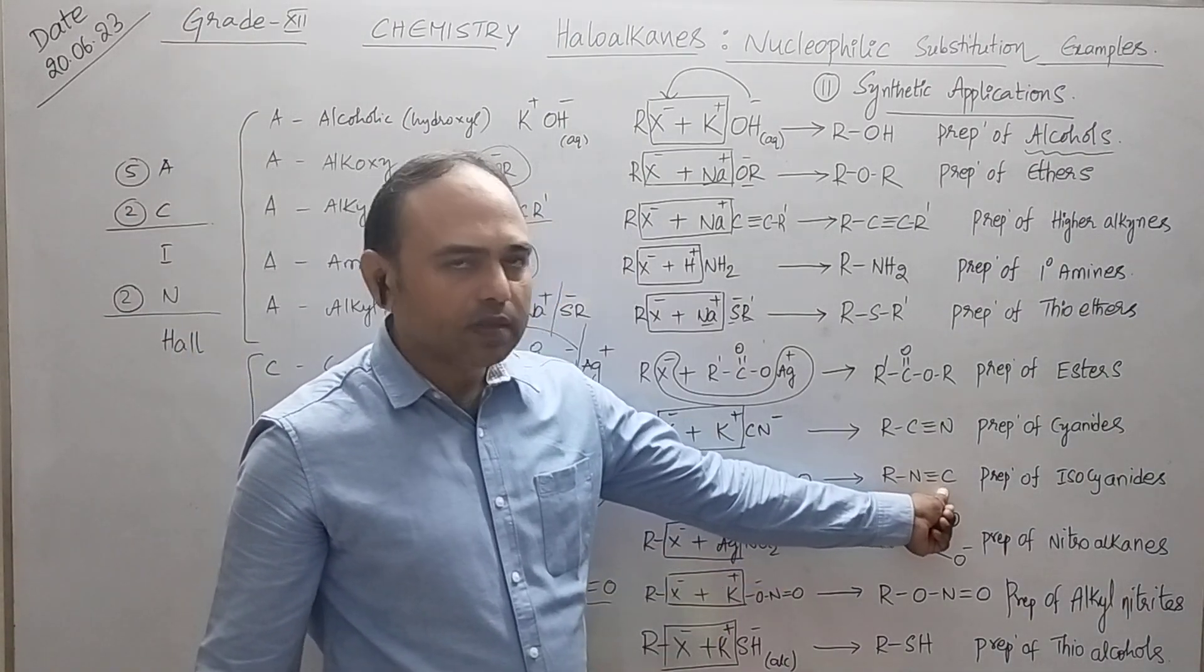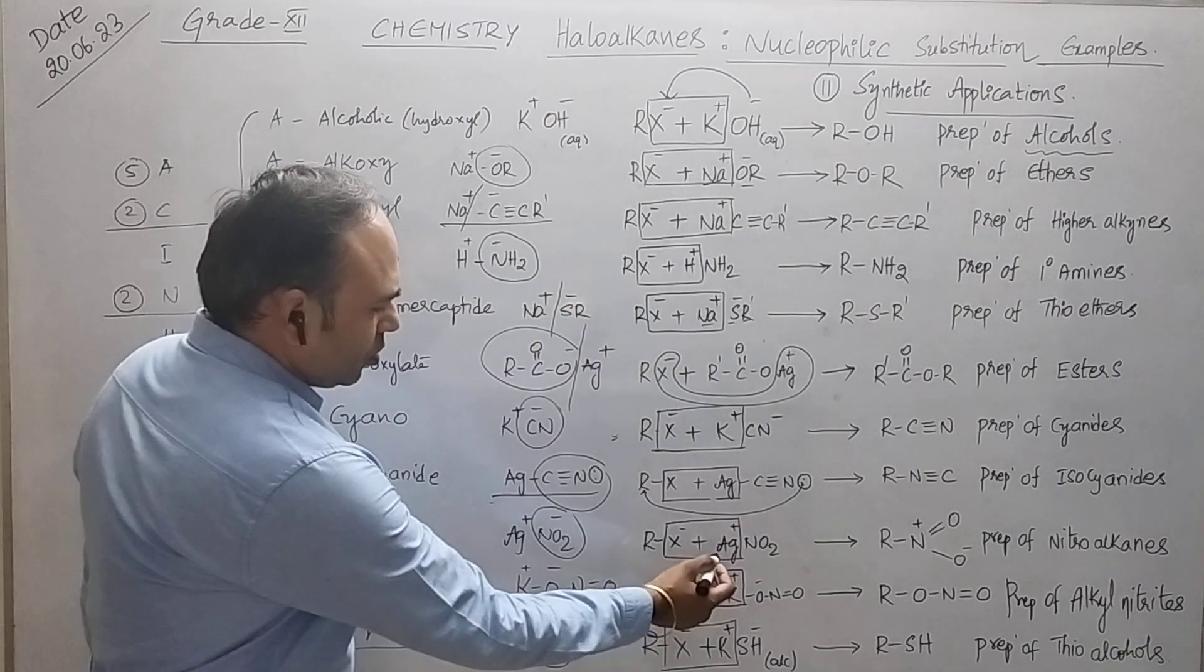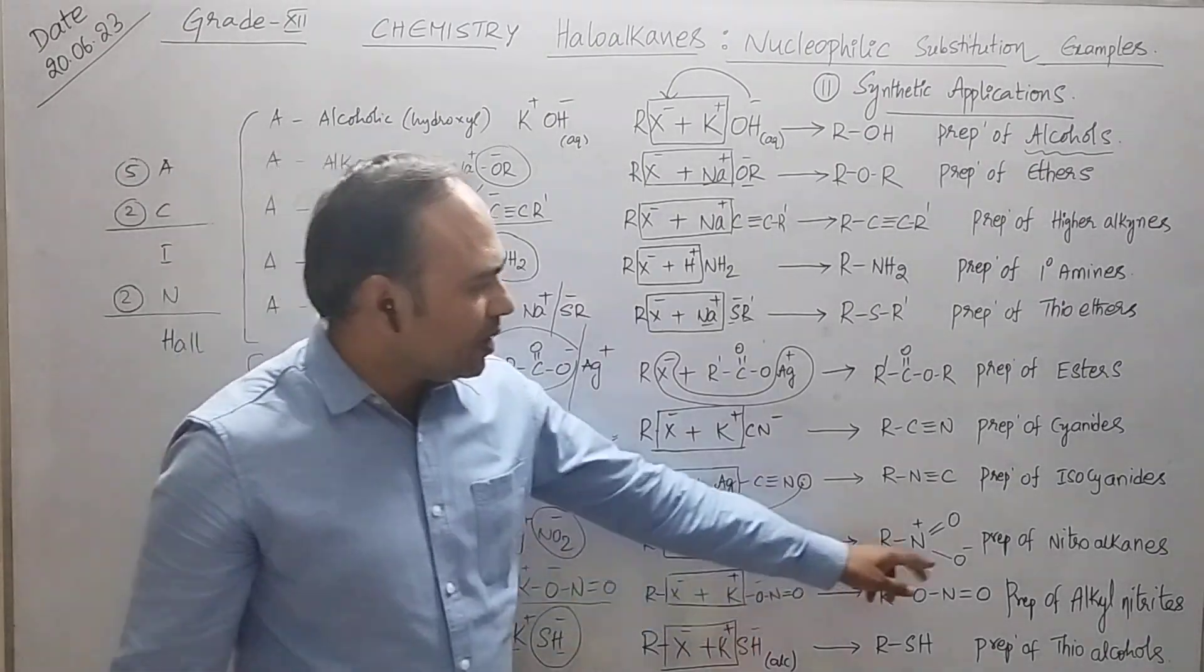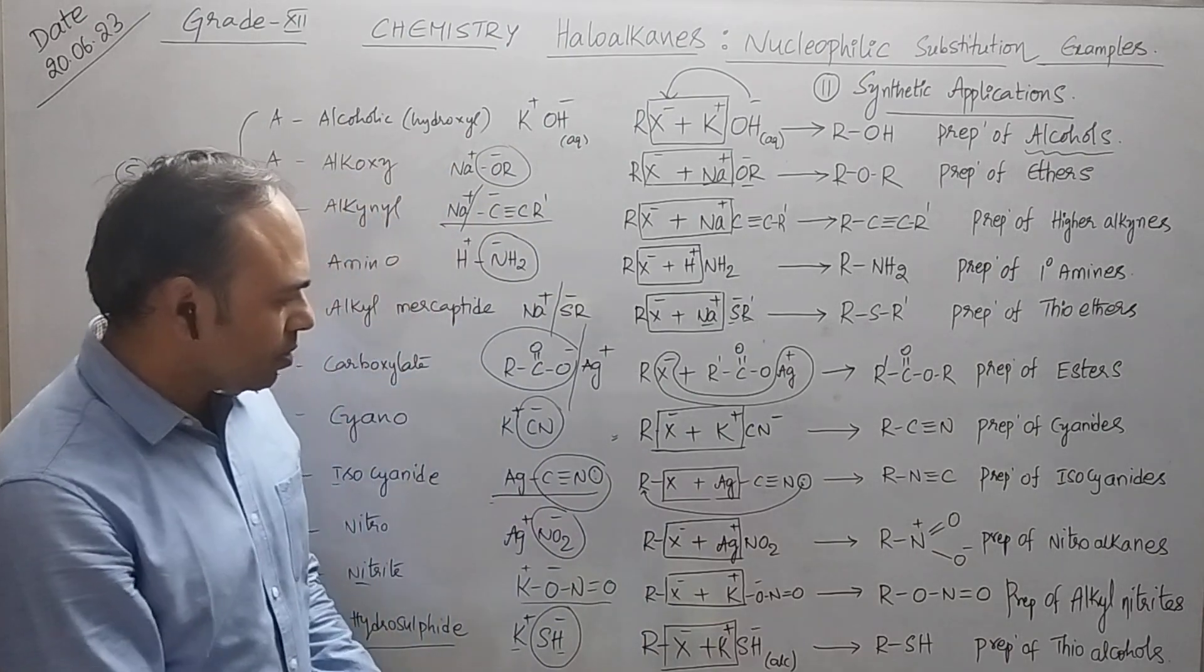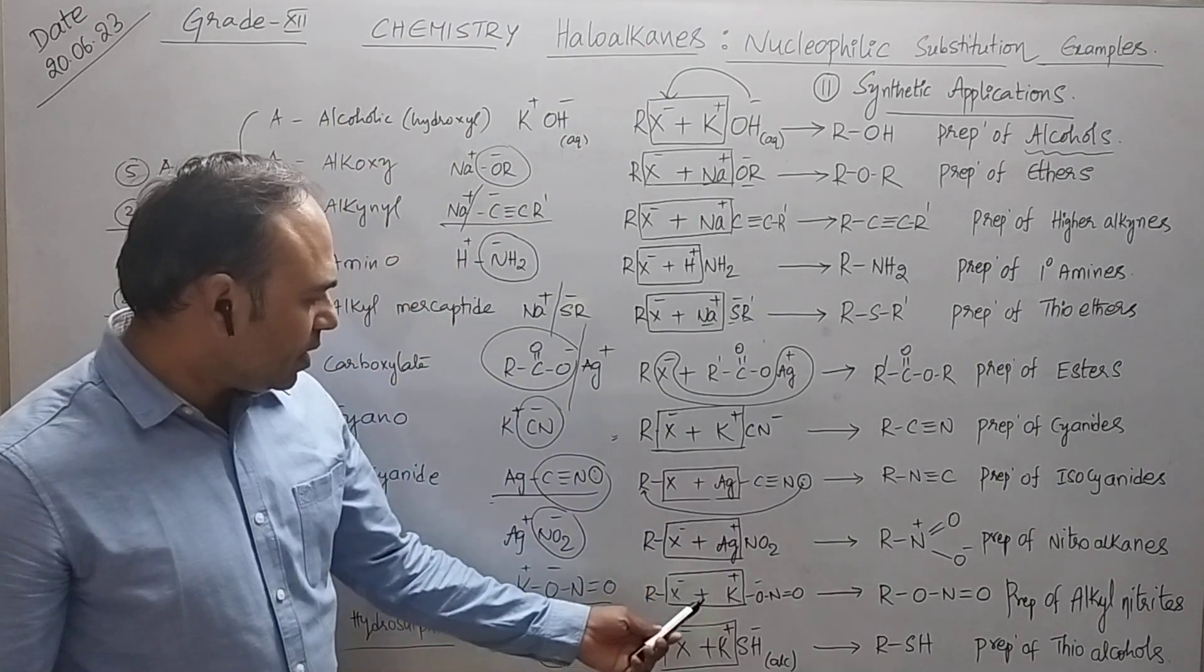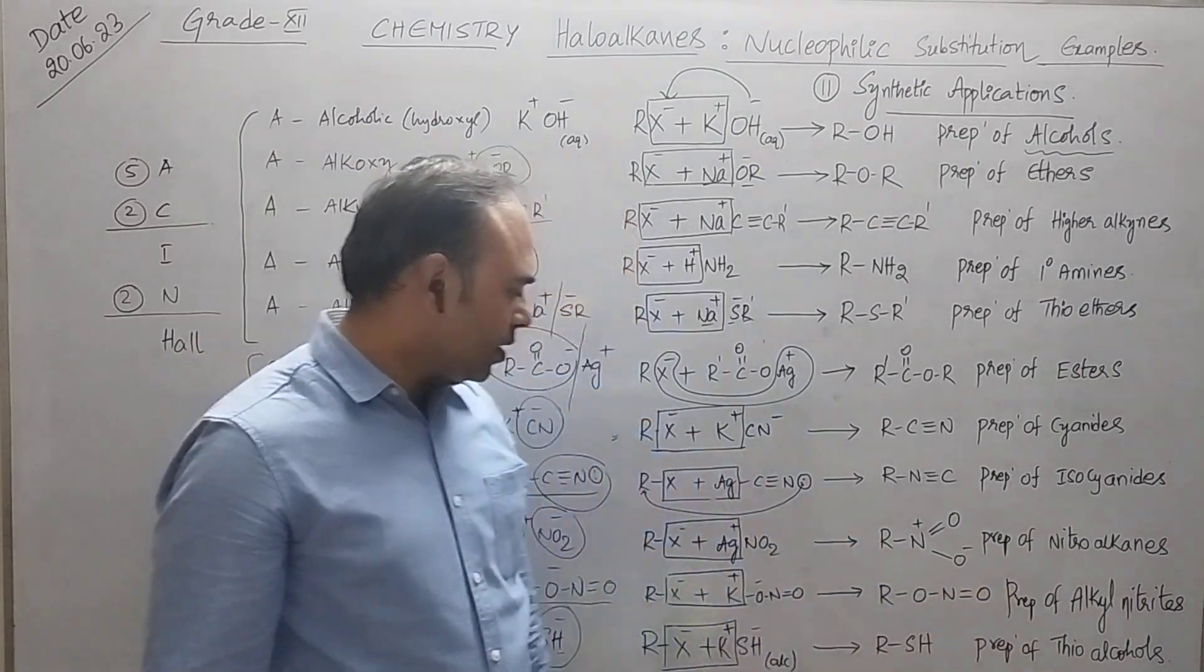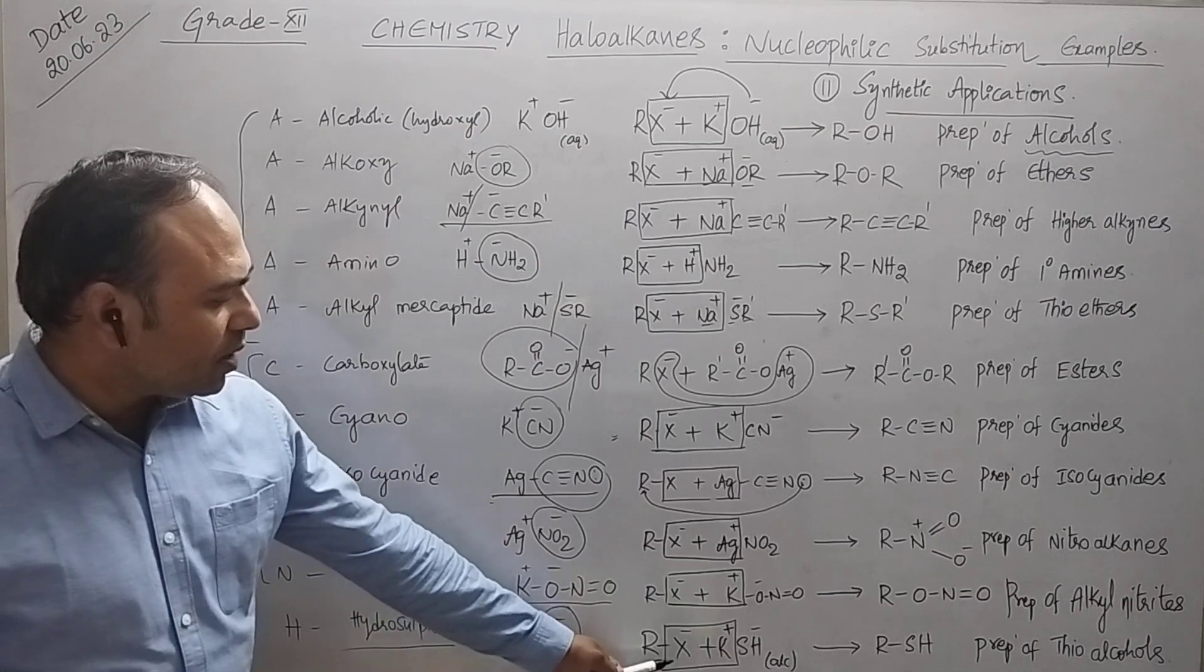Now next one, so if you are taking silver nitrite, you will get nitroalkanes. And tenth application, you're taking haloalkane and potassium nitrite, so that you will get alkyl nitrites.